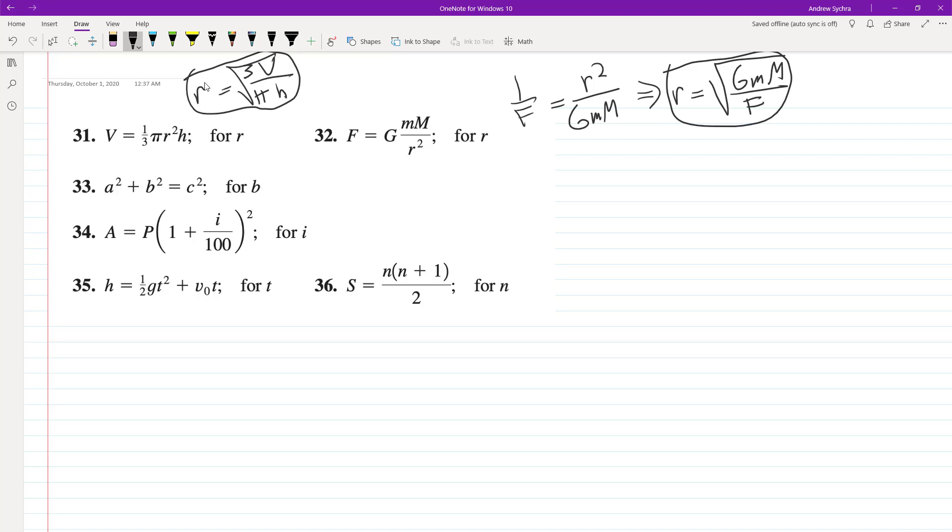Solve for B. All we're going to do is use the Pythagorean theorem basically. I'm going to shortcut this, so we have B = √(C² - A²).